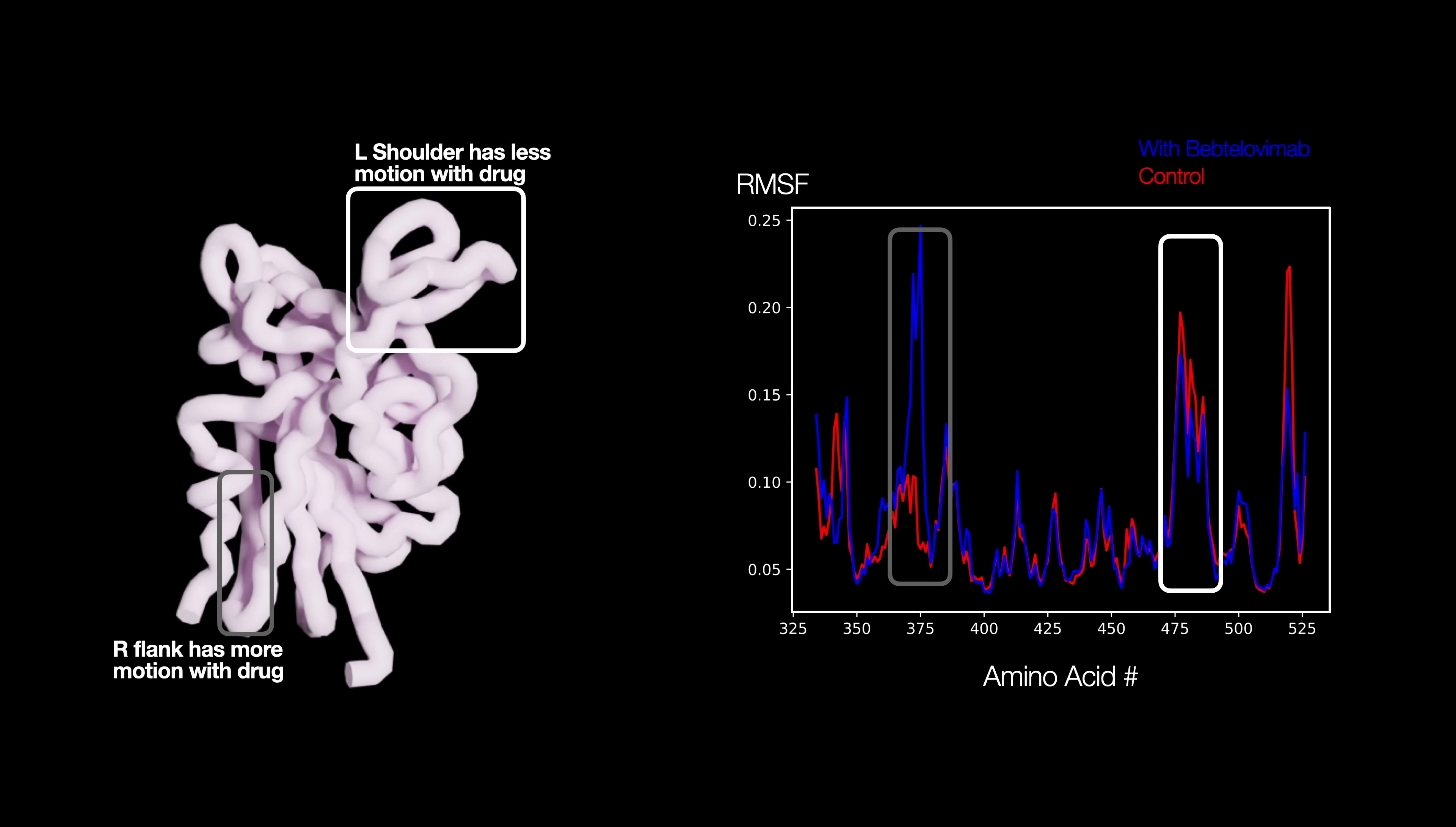But why does that happen? Our drug binds on the right shoulder of the protein. How can it affect the left side and the right flank?